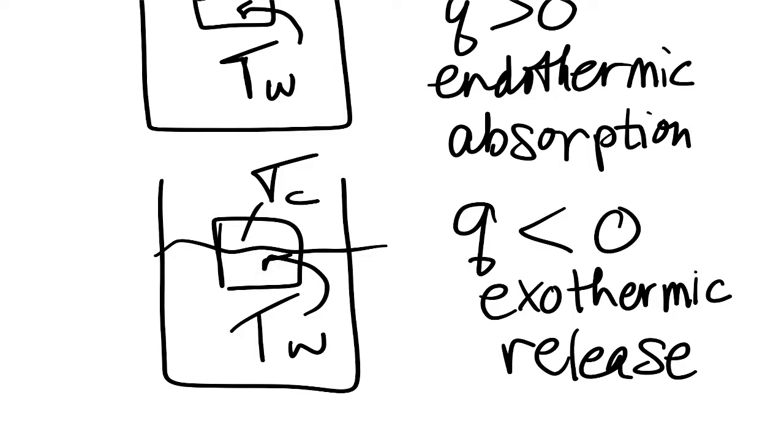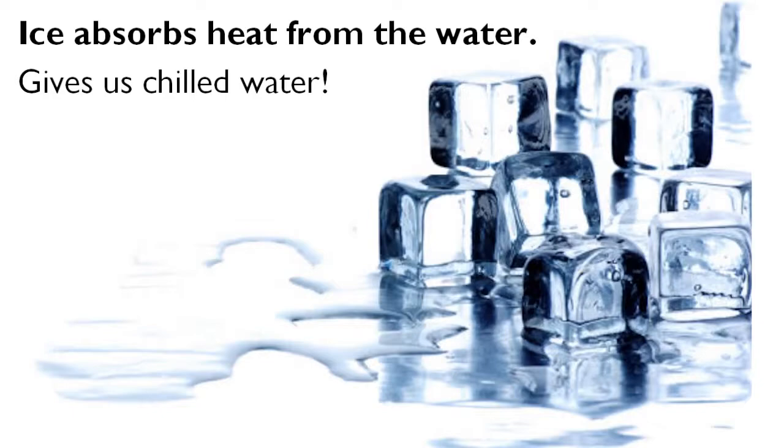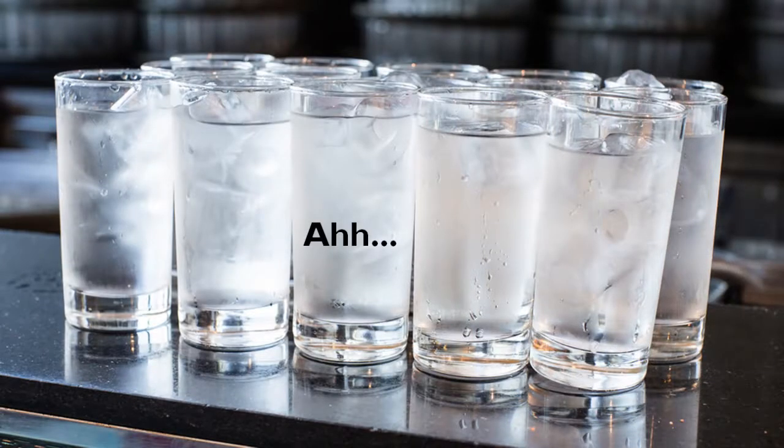When you discuss heat flow, it's very important that you specify which thing is your system and which thing is your surroundings. From the perspective of the ice cube, heat flow is positive. From the perspective of the water, heat flow is negative. This is just using natural considerations. The ice cube is going to absorb heat to melt, and the water is going to release heat to cool down. That's why we like to have ice cubes in the water on a hot day.